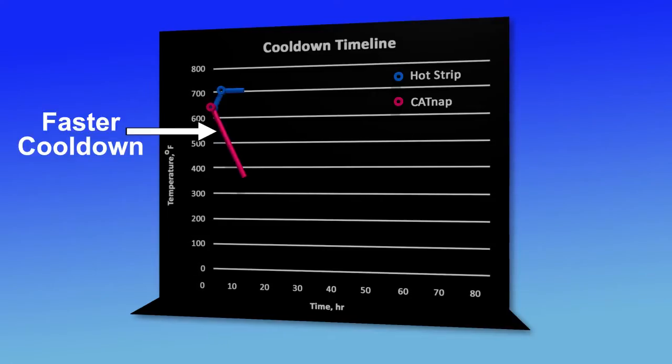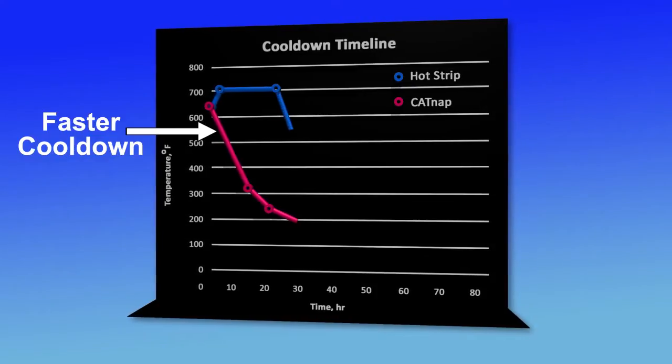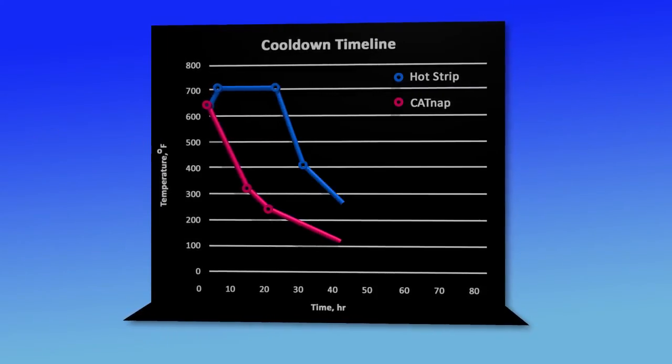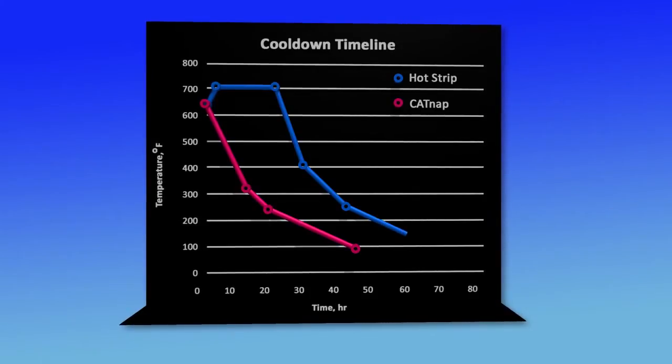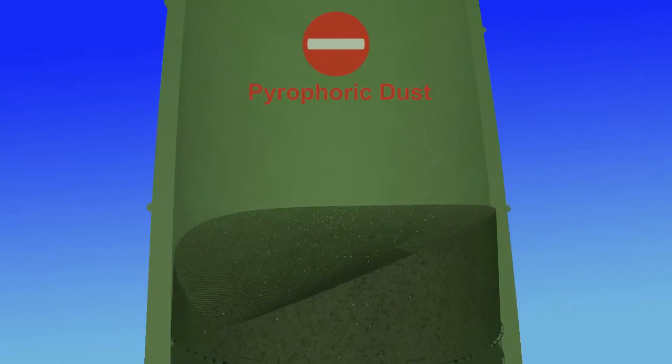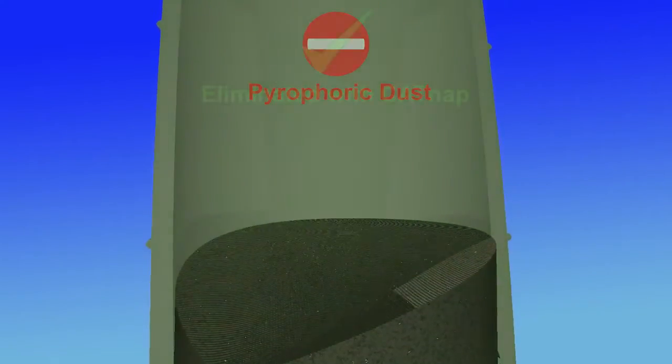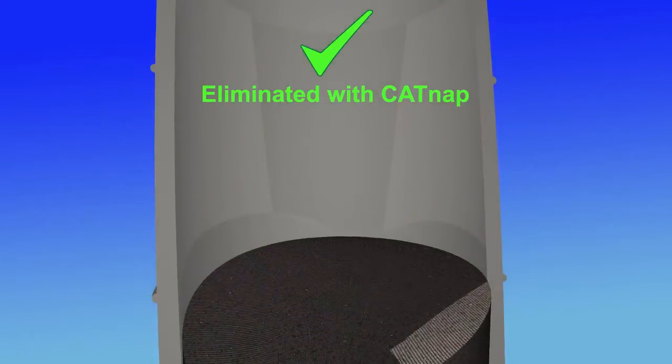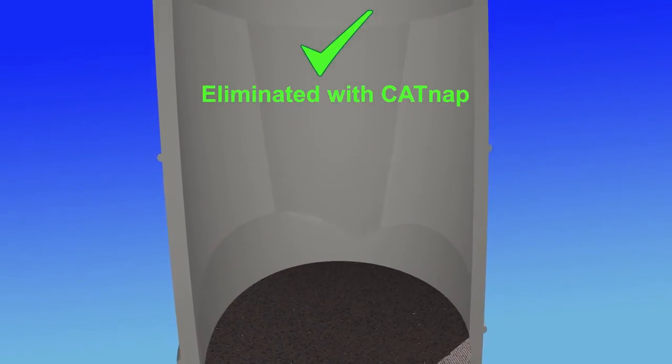A faster reactor cool down due to the superior heat transfer capability of liquid cooling. More rapid unit shutdown by eliminating hot hydrogen stripping. Eliminating exposure to toxic and pyrophoric dust. Reducing dust complications such as bag house plugging or fires.